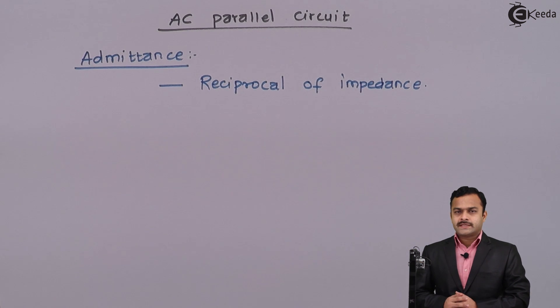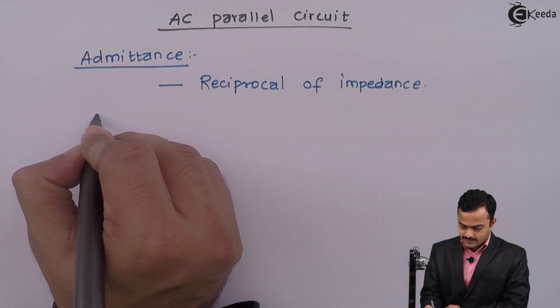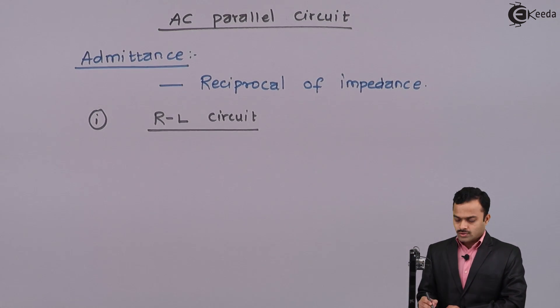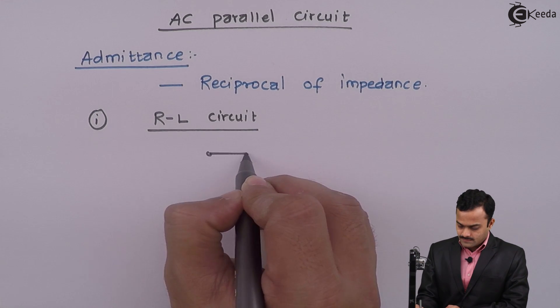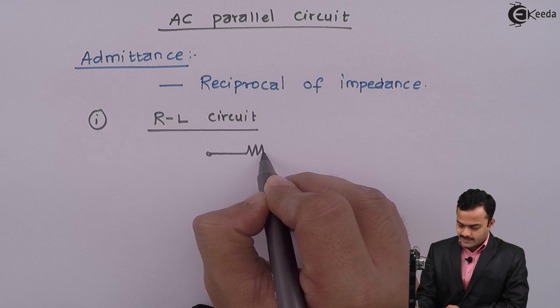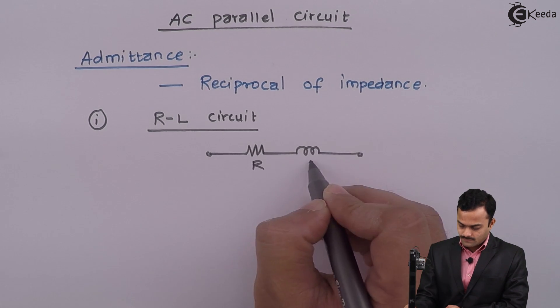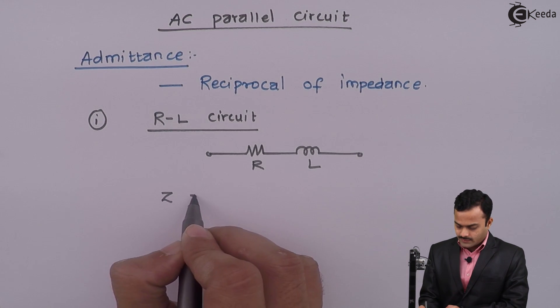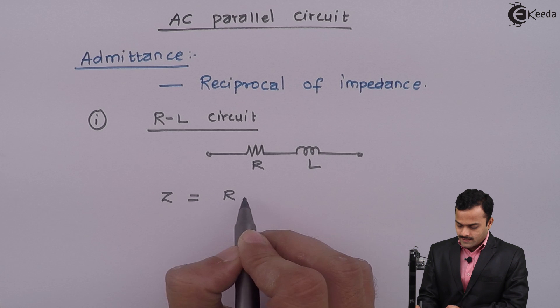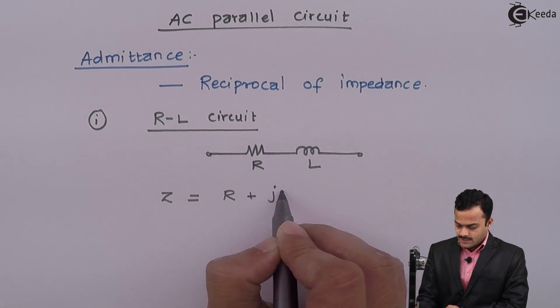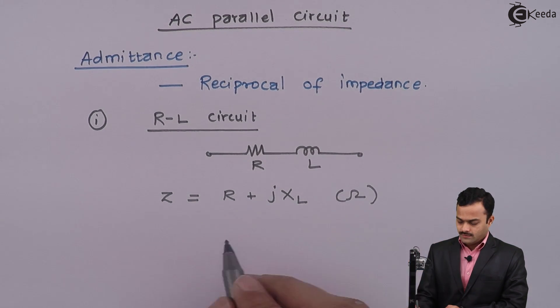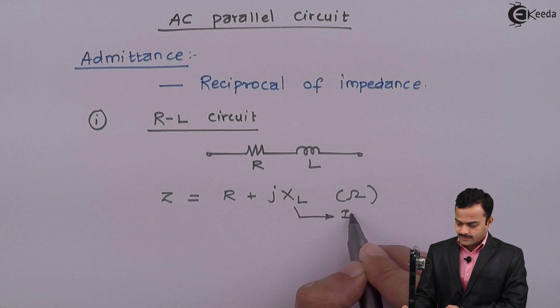Let's derive the expression of admittance. For that, let's start with the RL circuit. So I have a resistance in series with the inductor, and the impedance of this is given by Z = R + jXL, where the unit is ohm and XL is inductive reactance.